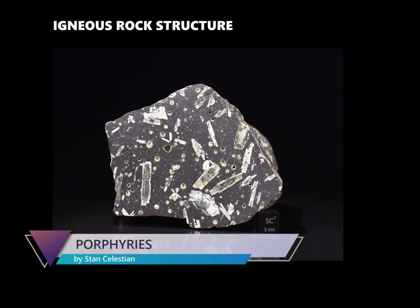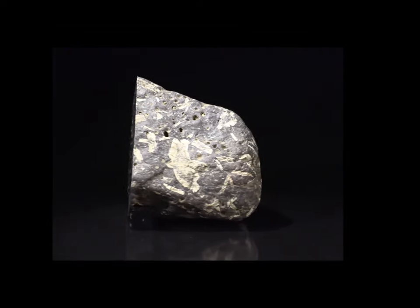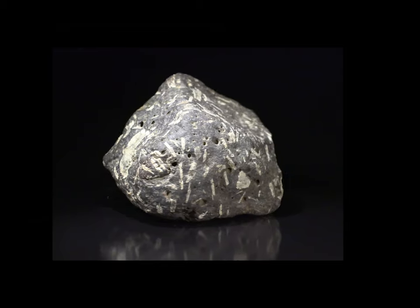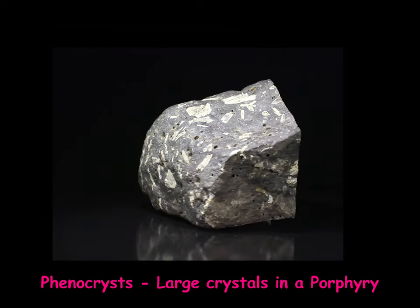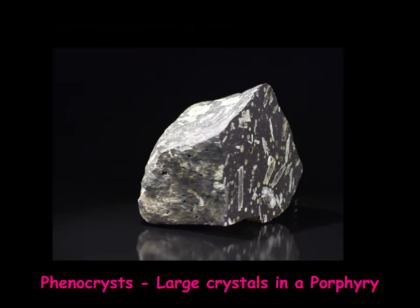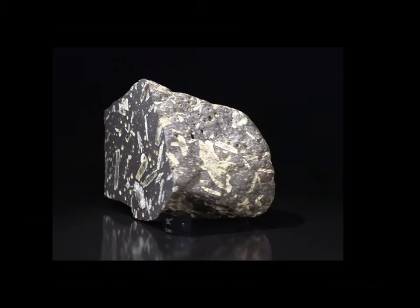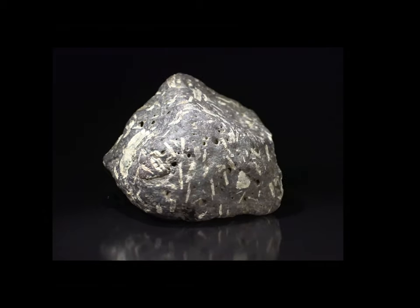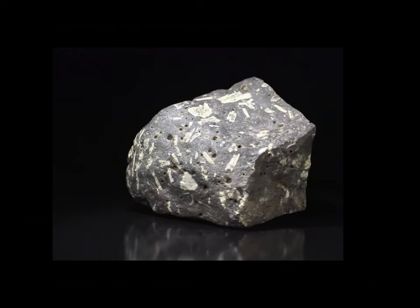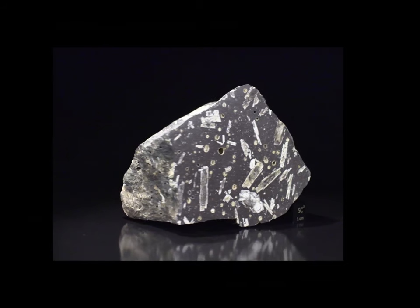The term porphyry is used in igneous petrology to describe rocks that have distinct crystal sizes caused by different rates of cooling and thus different rates of crystal growth. The large crystals in a porphyry are called phenocrysts and can be any mineral characteristic of an igneous rock, although feldspar crystals are most common. There is no specific delineation as to how big the phenocryst must be compared to the smaller surrounding crystals — it is simply stated that the distinction between the two should be obvious. It can be said that most igneous rocks are porphyritic to some degree.